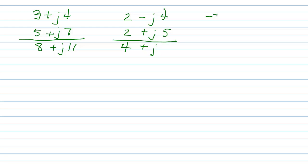Minus 2 minus J3 plus 5 plus J8 equals minus 2 plus 5 is 3. Minus J3 plus J8 is plus J5.